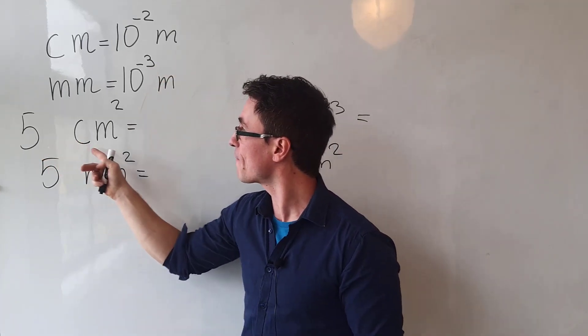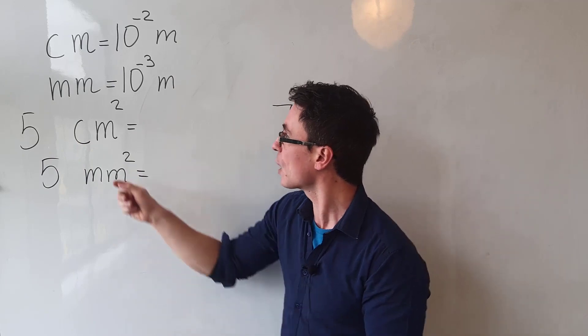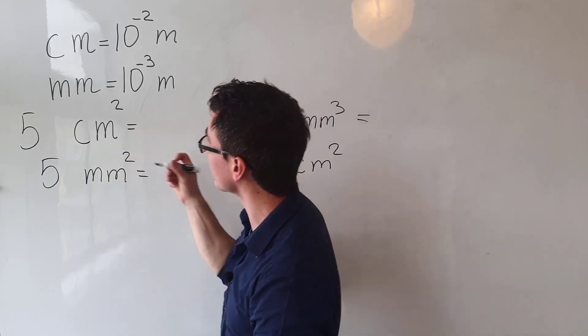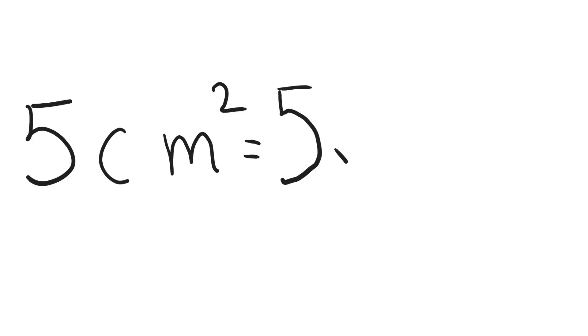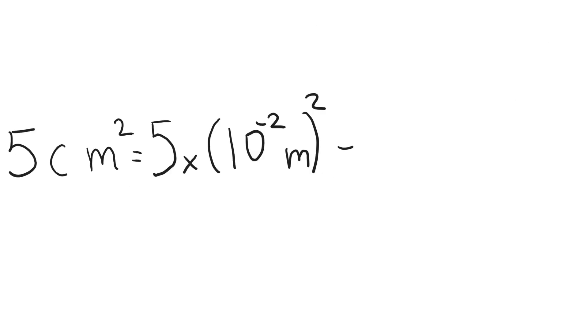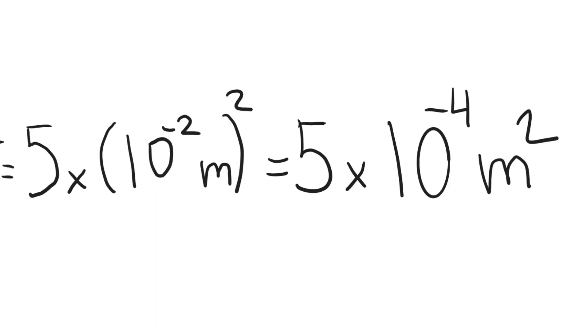Now if we want to convert 5 centimeters squared, all we need to do is remember that this square acts on both the centi and the meters. So this will actually be equal to 5 times 10 to the power of minus 2 meters squared, which is of course just equal to 5 times 10 to the power of minus 4 meters squared.